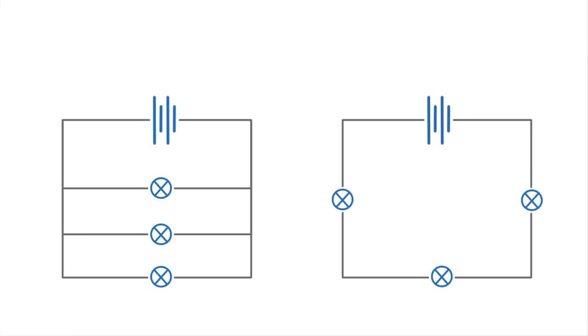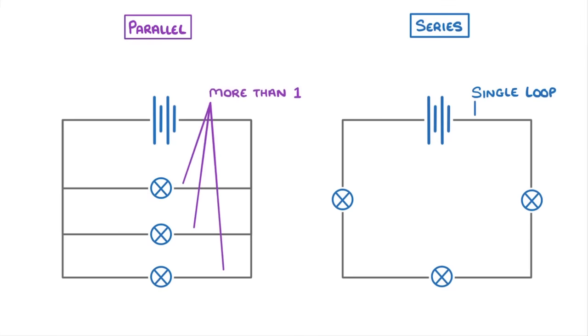A common point of confusion in exams is the differences between series and parallel circuits. In a series circuit, we only have a single loop, and the components are all connected one after the other. On the other hand, parallel circuits contain more than one loop, and this small difference completely changes how we measure current, voltage, and resistance.